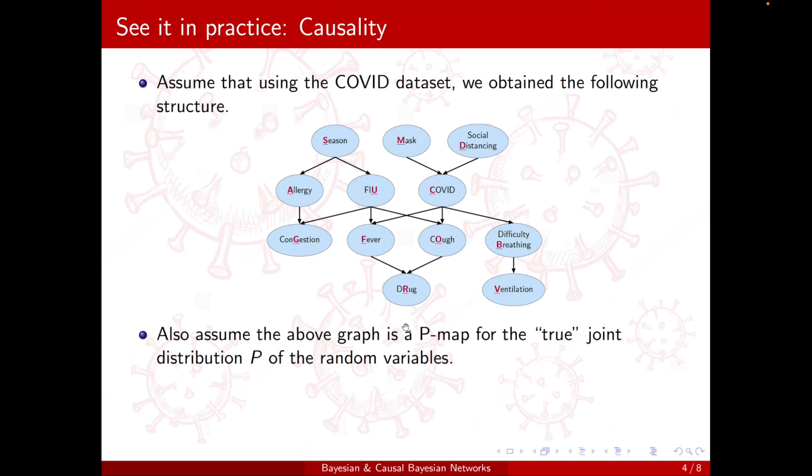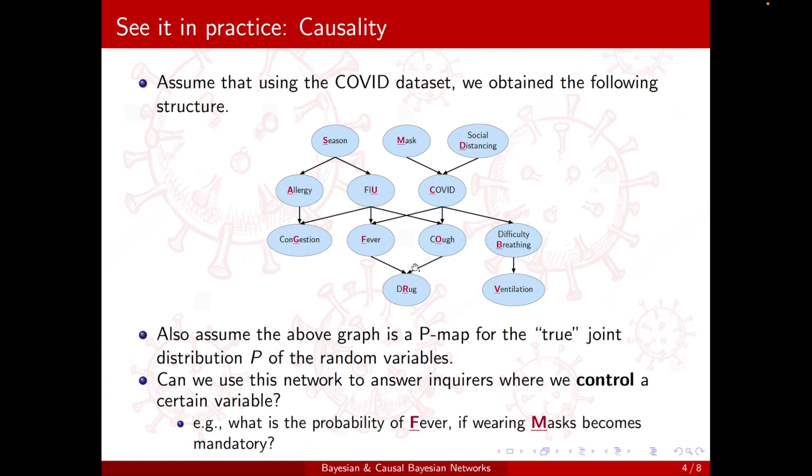And also assume that the above graph is a P-map for the true joint distribution P of random variables. So perfect, it's a P-map, there's no additional independencies that I was not able to capture here. Now, can this network be used to answer inquiries where we control a certain variable? For example, what is the probability of fever if wearing masks become mandatory?